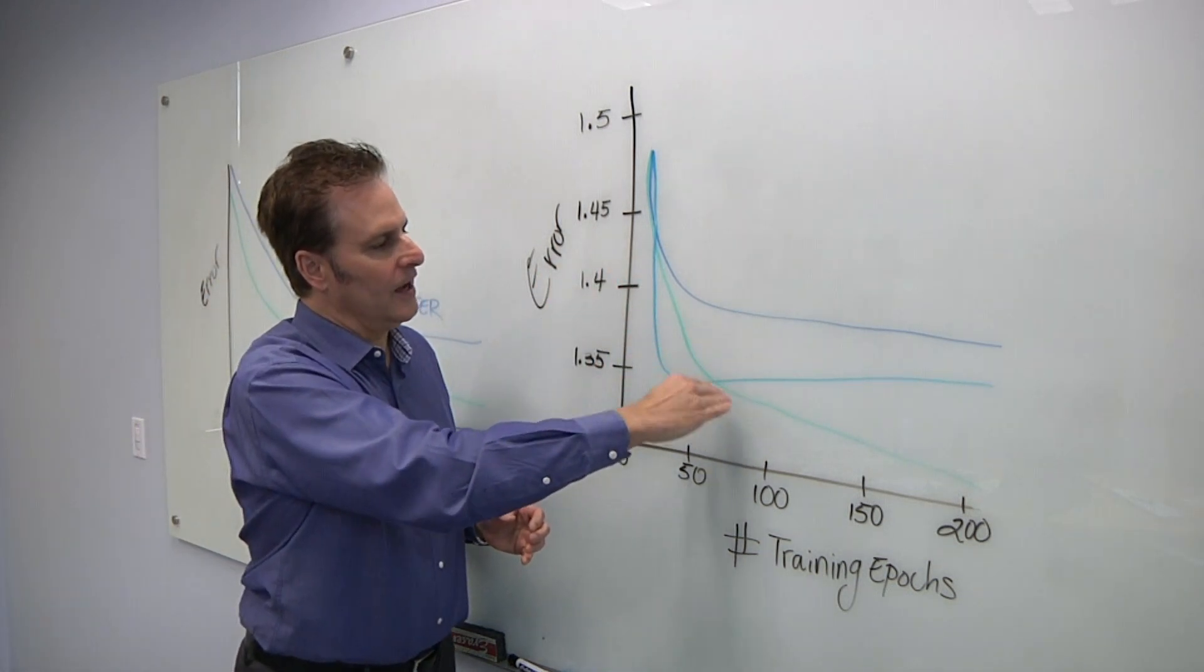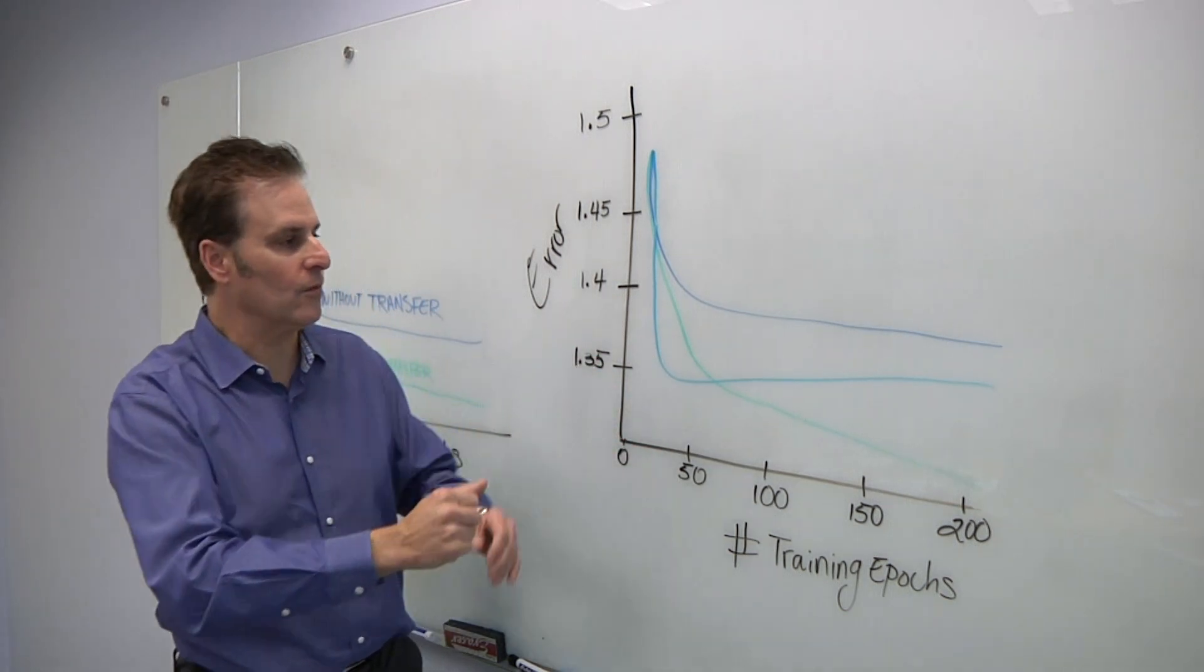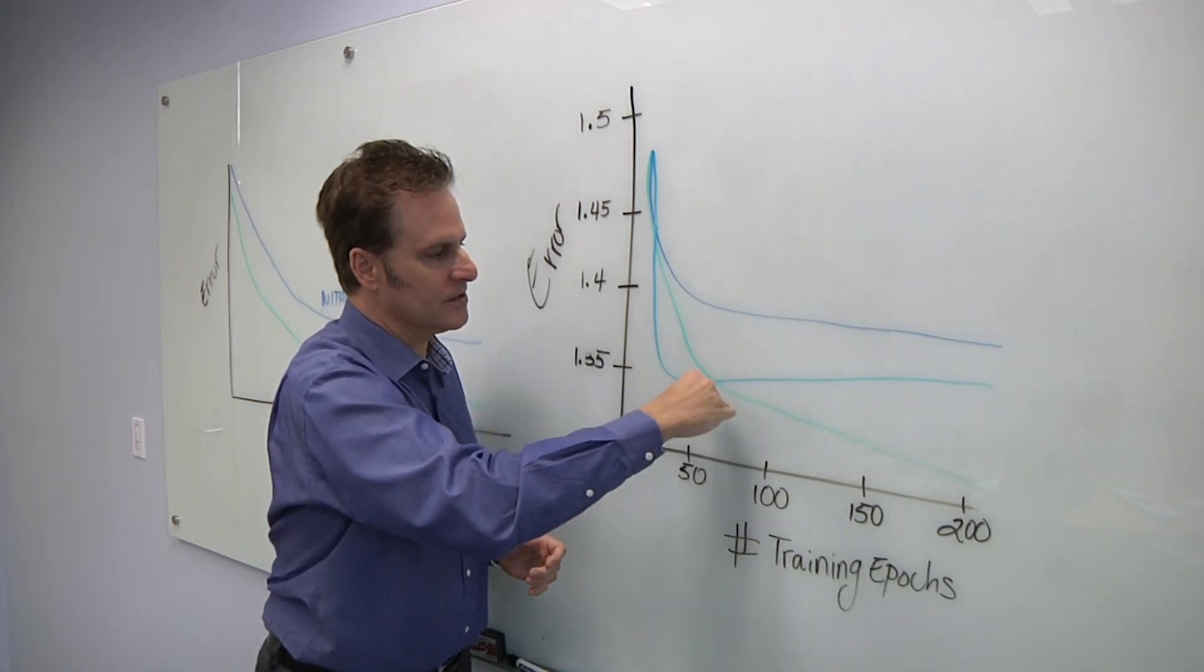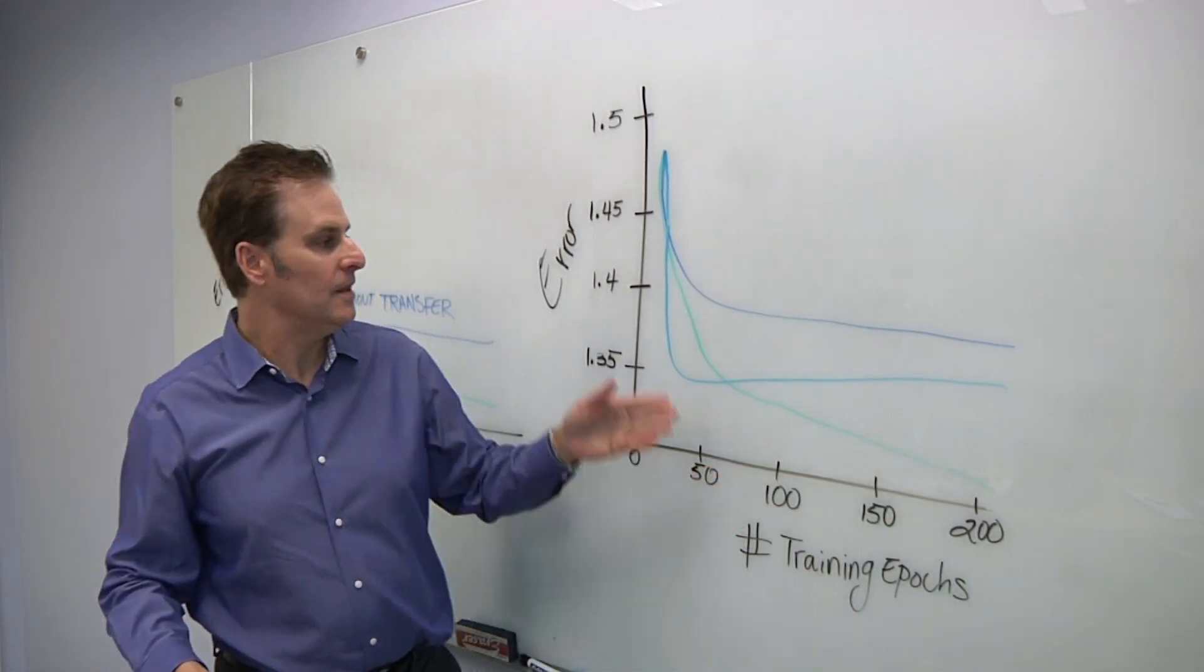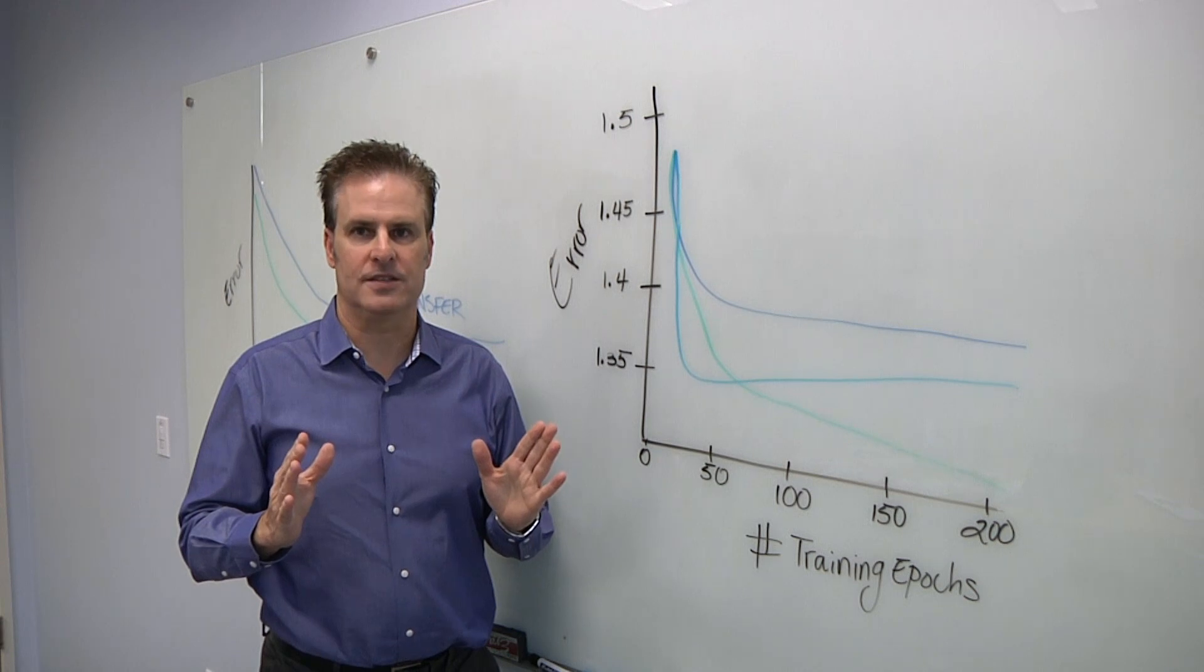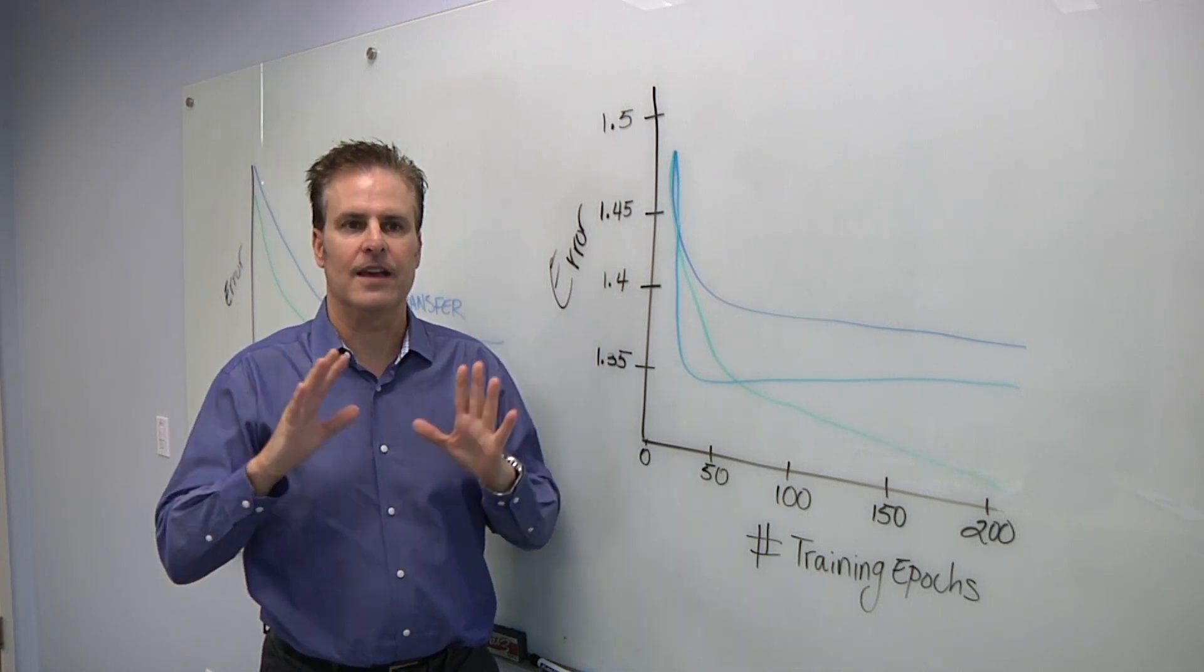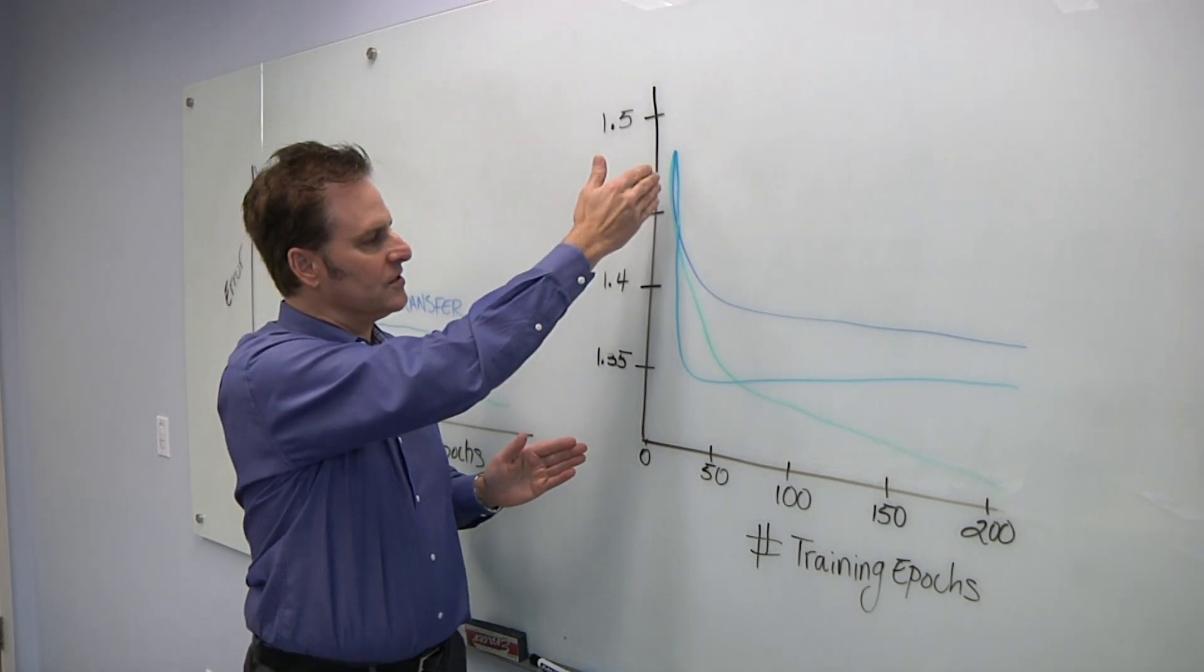The green line is what I showed before, and that's where they freeze the earlier layers of the network and retrain the subsequent layers on the new data. As you can see, that gives you the best possible performance over time. This third line is a different technique they used where they used transfer learning to set the weights of the new network for the new equipment, and then they allowed the entire network to be retrained by the new data. The results were very interesting.